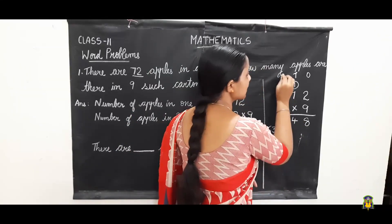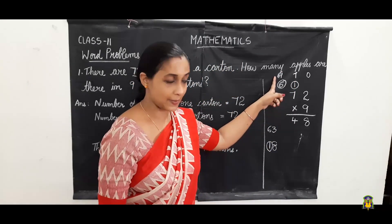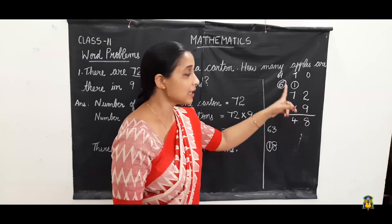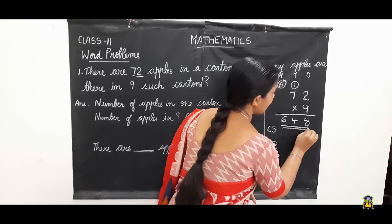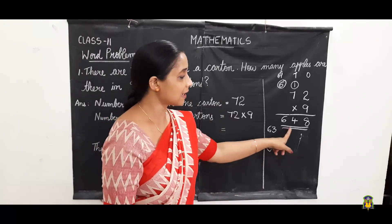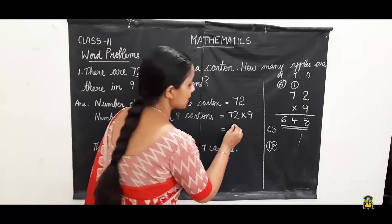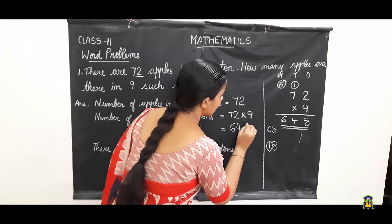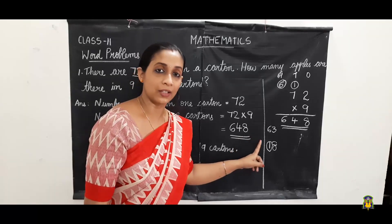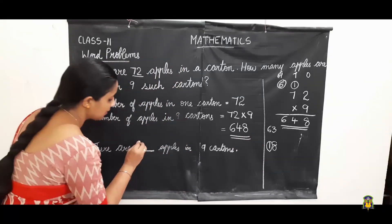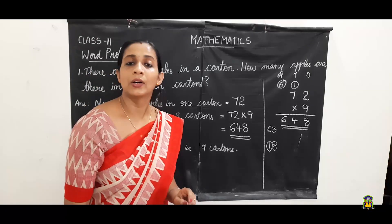Sixty-three plus one is sixty-four. We will write the four here and six as carryover to the next place, that is hundreds place. We don't have any number to multiply, so we will bring down this six. So six hundred forty-eight — we got the answer as six hundred forty-eight. In nine cartons we have six hundred forty-eight apples.